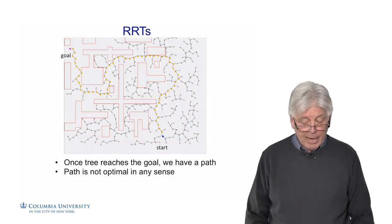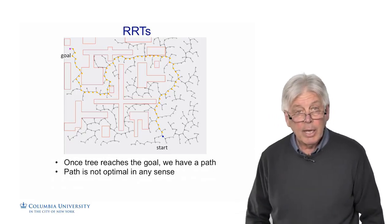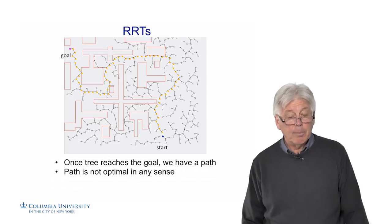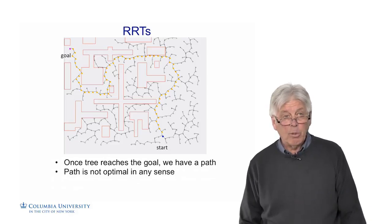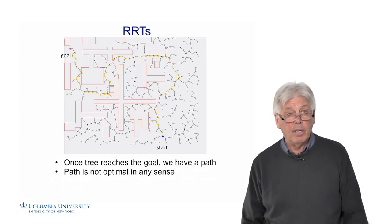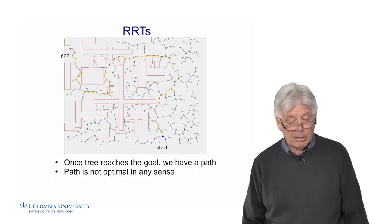Once the tree reaches the goal, we have the path. The path is not optimal in any sense, as you can see. It's stochastic, so it has a lot of randomness to it, but it does give you a path. This is important in path planning in higher dimensions, where it may be very difficult to find any path at all. This will give you a path, and then after you get the path, you can use methods to try to improve it.